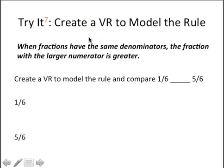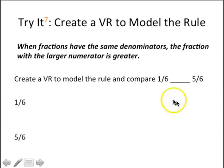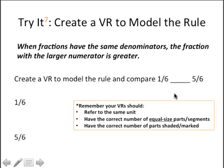Now we're going to model our next rule: when fractions have the same denominators, the fraction with the larger numerator is greater. For number seven on your guided notes, create visual representations to model the rule and compare one-sixth and five-sixths — make a model for one-sixth, make a model for five-sixths, and then write your comparison symbol. Remember, your visual representations have to refer to the same unit, have the correct number of equal-size parts or segments, and the correct number of parts shaded. Pause and then come back to check.